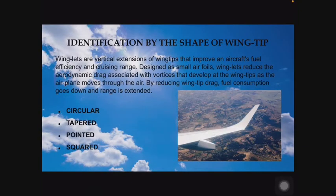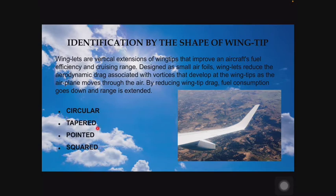One of the main methods of identification of aircraft is by identifying the shape of the wing tip. The end of the wing is known as a wing tip. Winglets are the vertical extensions of this wing tip. There are four types of wing tips: mainly circular, tapered, pointed, and squared.